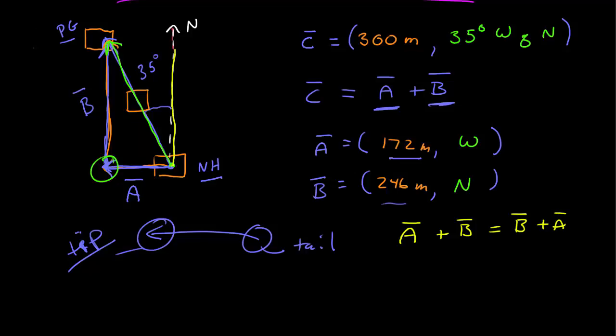If you take the B vector first, you go up here and then add A, that gives you the same result. Note the method. First find your vector B and place it, translate but not rotate, where you want it to go.